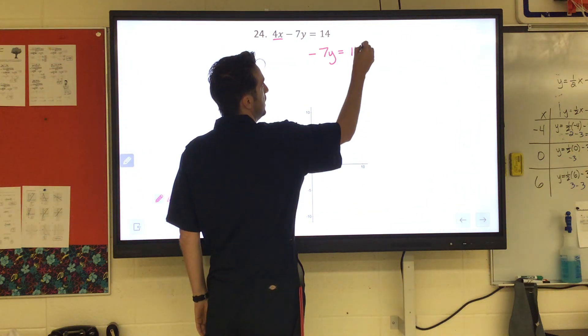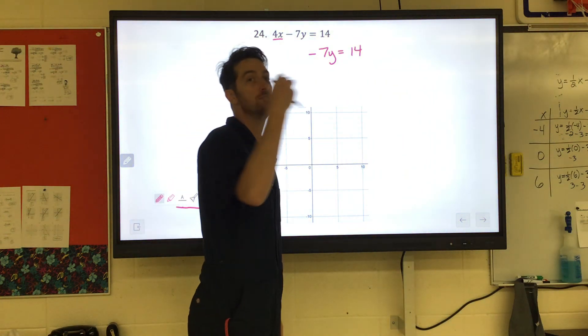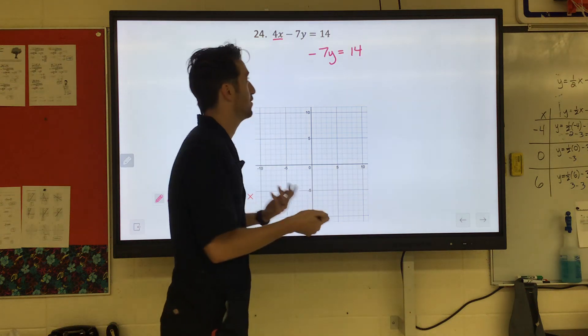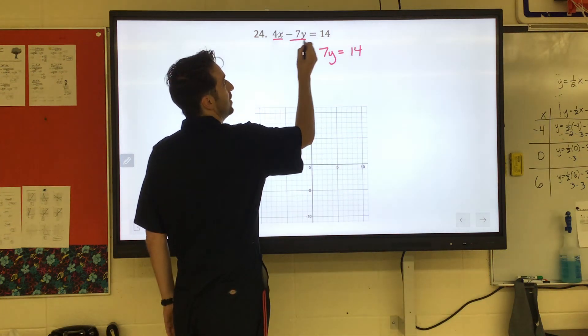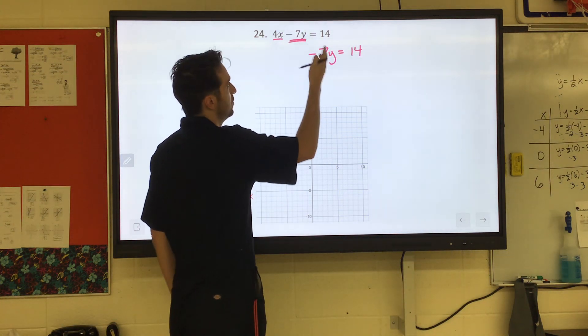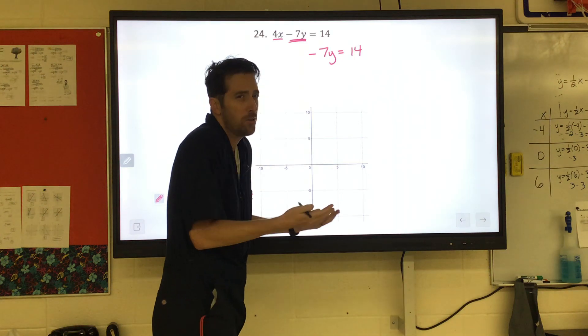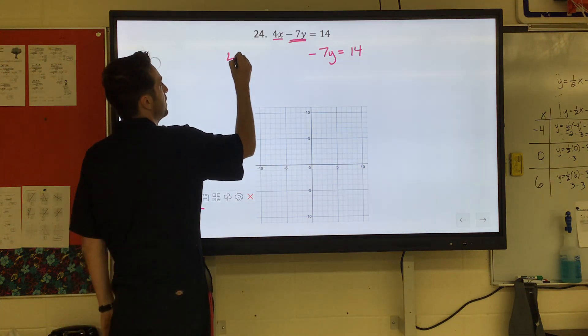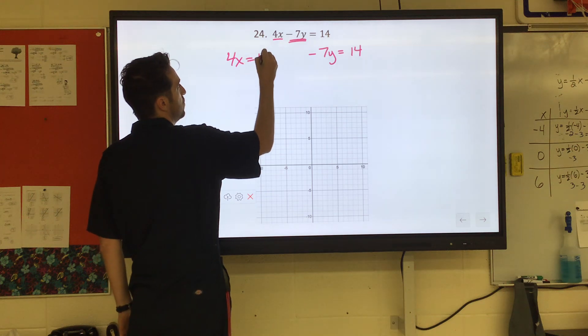Negative 7y equals 14. Then it would say substitute in 0 for y and solve for x. But again, negative 7 times 0 is 0, and that's just going to go away. So just write the equation without the y's. So we'll have 4x equals 14.